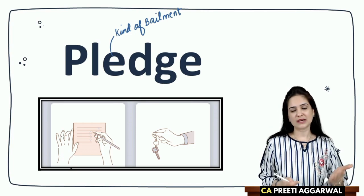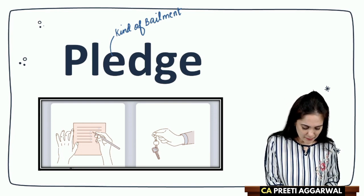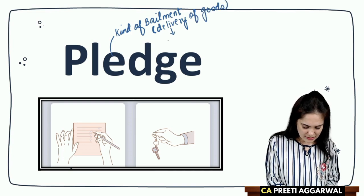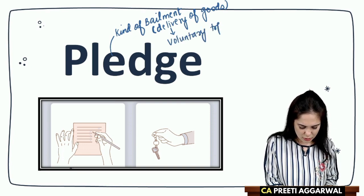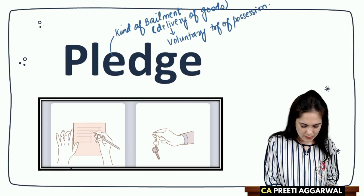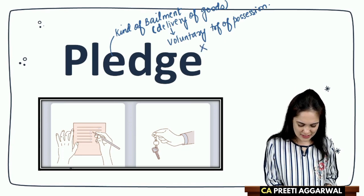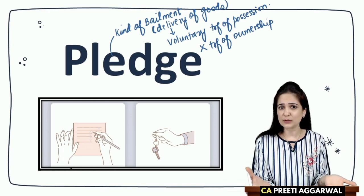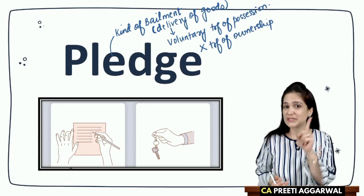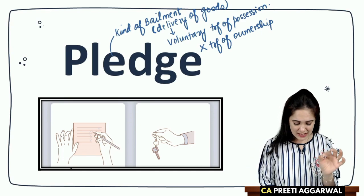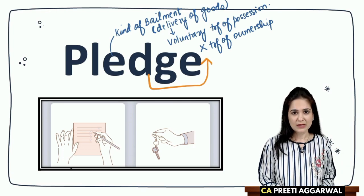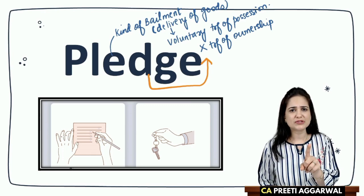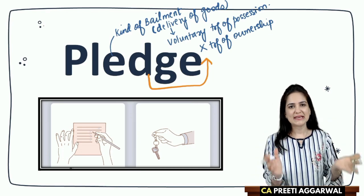Pledge is a kind of bailment. In bailment there is delivery of goods. Delivery means voluntary transfer of possession. Possession is transferred; ownership is not transferred. In pledge we deliver the goods to the other person. There is voluntary transfer of possession, only possession is transferred, ownership is not transferred. That is why pledge is a kind of bailment.